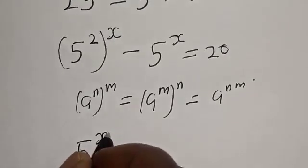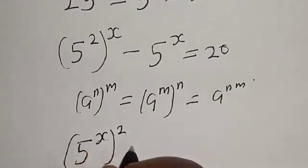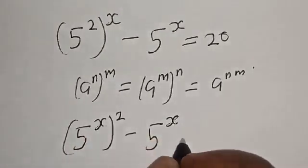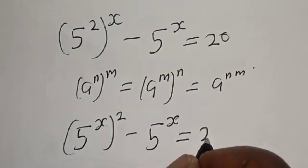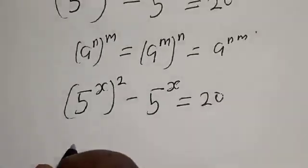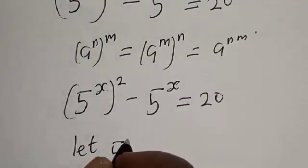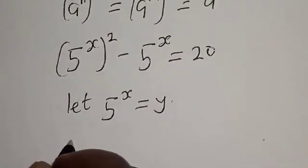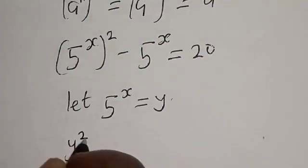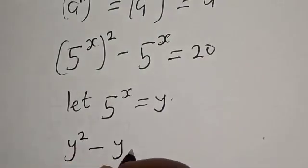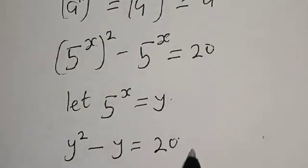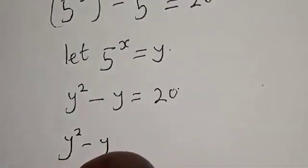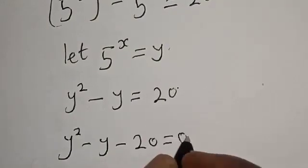We have 5 raised to power 2x minus 5 raised to power x is equal to 20. Let 5 raised to power x equal y. Then we get the quadratic equation: y squared minus y minus 20 is equal to 0.